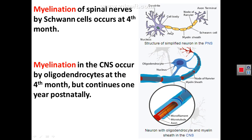Some nerves are myelinated and others are not. Myelination in peripheral nerves occurs by Schwann cells that encircle the axons, beginning in the fourth month. Myelination in the central nervous system is derived from oligodendrocytes, also from the fourth month. However, central myelination of nerve fibers in the white matter of the brain is not completed during intrauterine life — it continues until the first postnatal year.